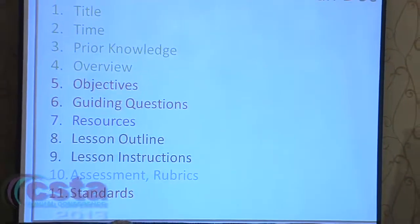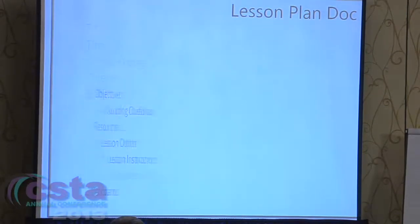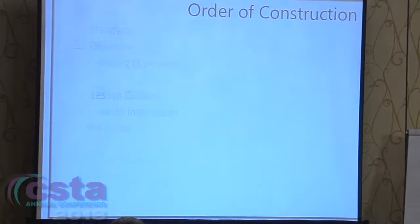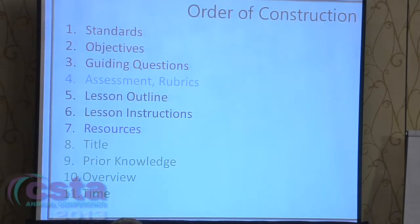There are 11 items in a CSP lesson document: title, time, duration, prior knowledge, overview, objectives, guiding questions, resources, lesson outline, lesson instructions, assessment/rubrics, and standards at the bottom because they're long. In constructing a CSP lesson, you don't go top to bottom — you start with the standards first, then think about what you want to get at, and work from there. The green items 8 through 11 come last: title, prior knowledge, overview, and duration.